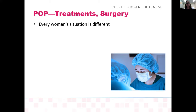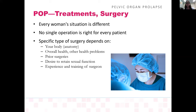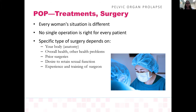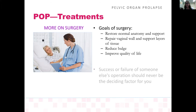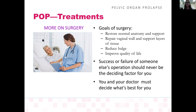Every woman's situation is different — there is no single operation or option that is right for every patient. It depends on your body, your overall health, prior surgery, desire to maintain sexual function, and the experience and training of the surgeon. The goal of surgery is to restore normal anatomy, repair the vaginal wall, reduce the bulge, and improve quality of life. You and your doctor must decide together what is best for you.